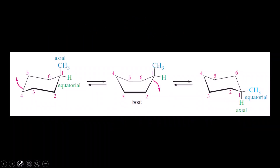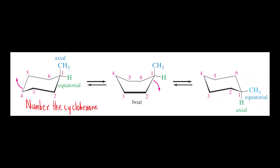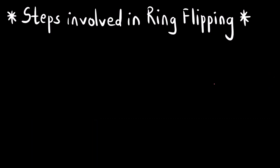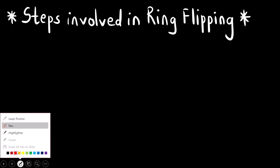So how do we exactly do the ring flipping? The first step is to number the ring — number the cyclohexane ring that is given. Next, this carbon moves above, and then carbon one goes below. Let us now understand step by step what happens in this process.